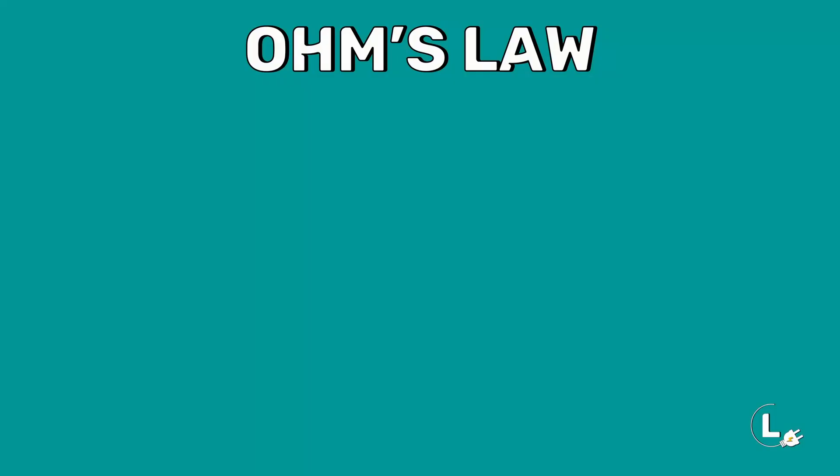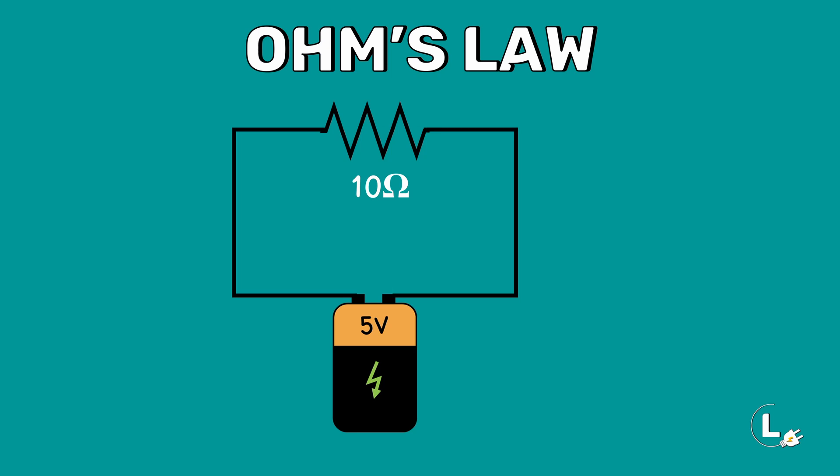To understand this Ohm's Law, let's look at some examples. Let's take a battery of 5V and connect it across a resistor of 10Ω. Now, can you find the current that flows through the circuit? Using Ohm's Law, we can find the current value. I is V divided by R. We get the current value as 0.5A.